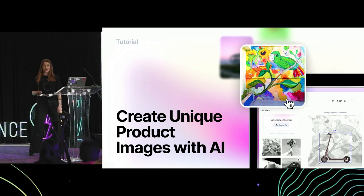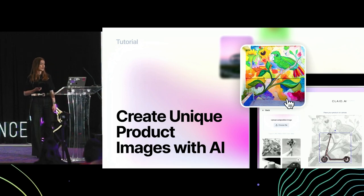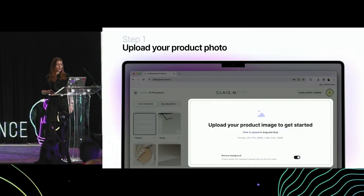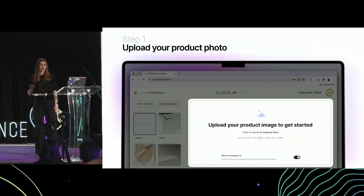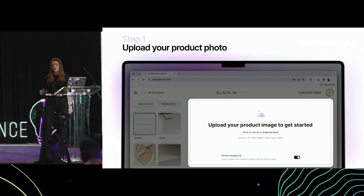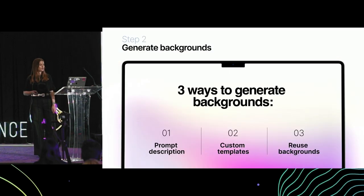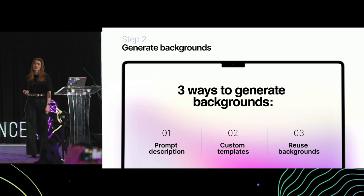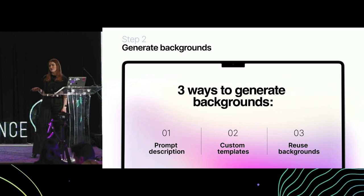So let's get a little bit practical, and I'll show you a few ways how you can, using ClayDI, generate product shots for the brands or objects that you work with. We always start by uploading an image — that's a simple step. If you have transparent PNGs or original files, that's the best and we'll get you the best quality. If not, we will always remove the background to clean it up. And we can create visuals in three main ways: first by prompts, then by templates, and we can also reuse backgrounds that you love.